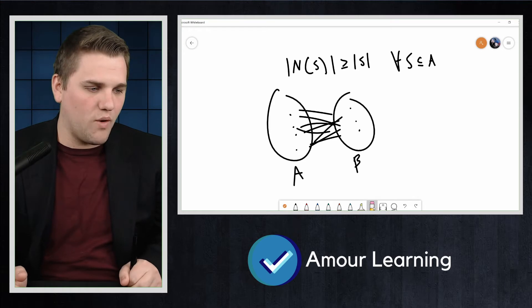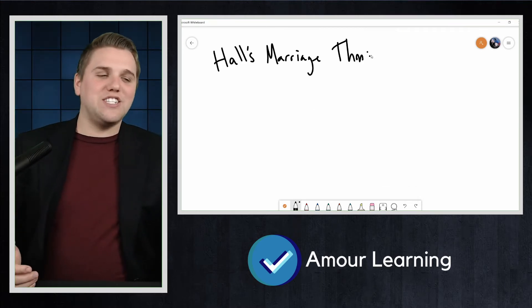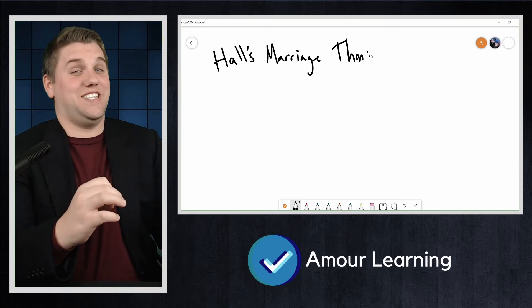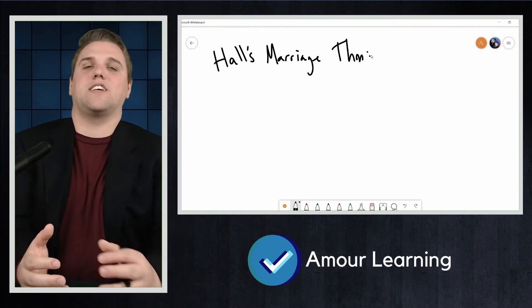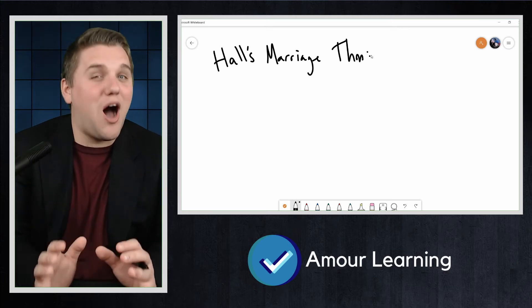Hall's Marriage Theorem. Let's go through what it says exactly. It's important that Hall's Marriage Theorem came out in 1935 because that's actually really recent in mathematics, in the history of mathematics.